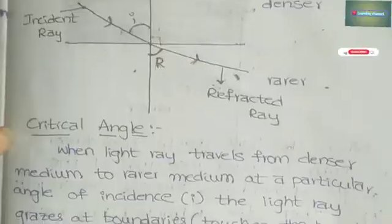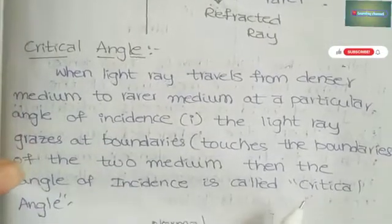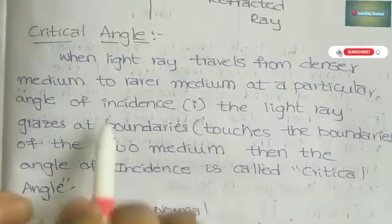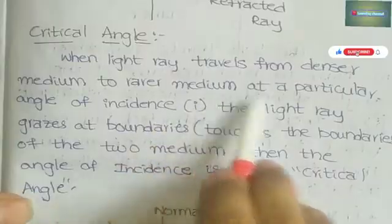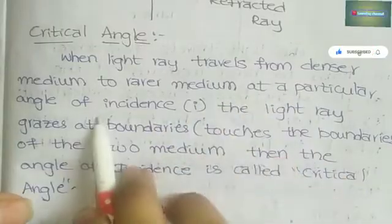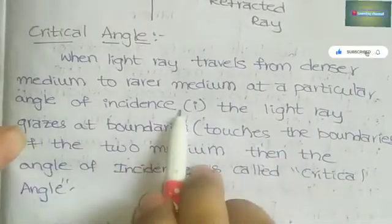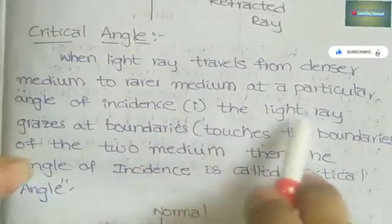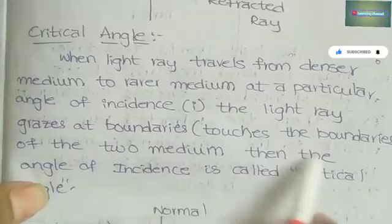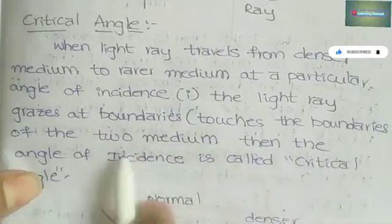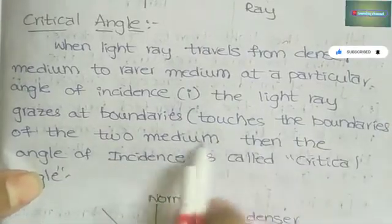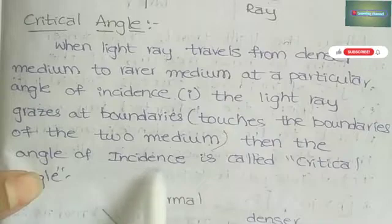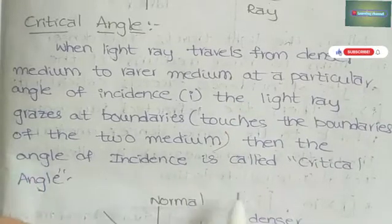What is meant by critical angle? When a light ray travels from denser medium to rarer medium at a particular angle of incidence, the refracted ray travels along the boundary of the two media. The angle of incidence at this condition is called the critical angle.